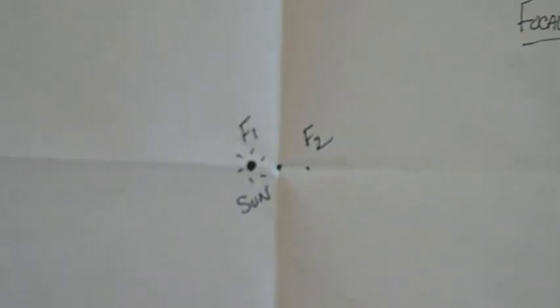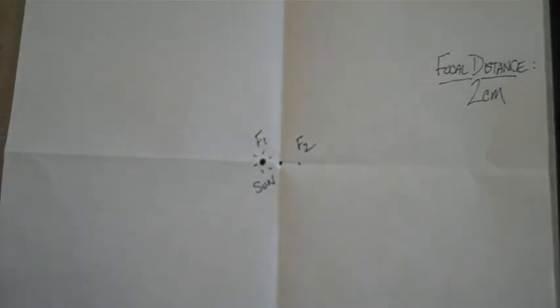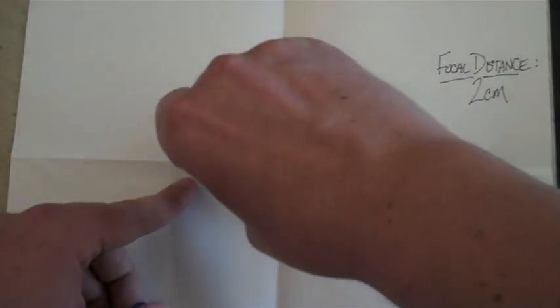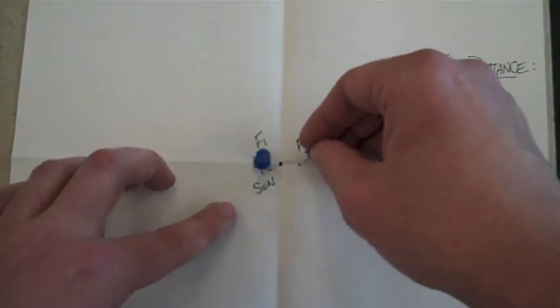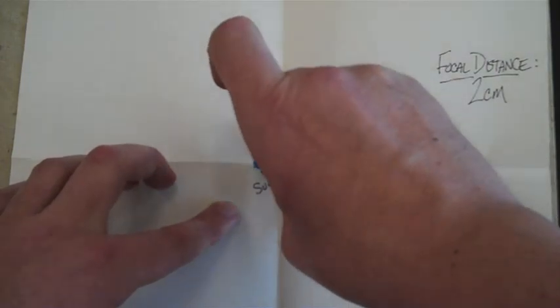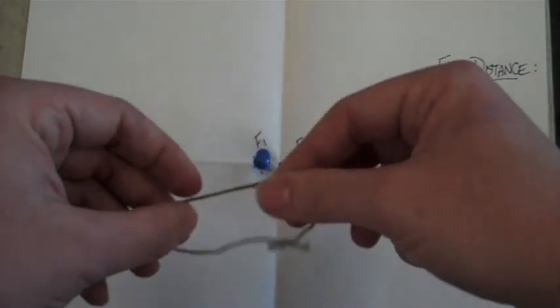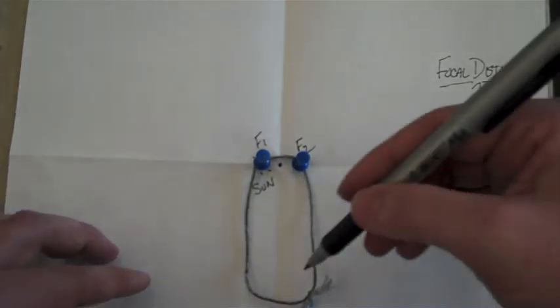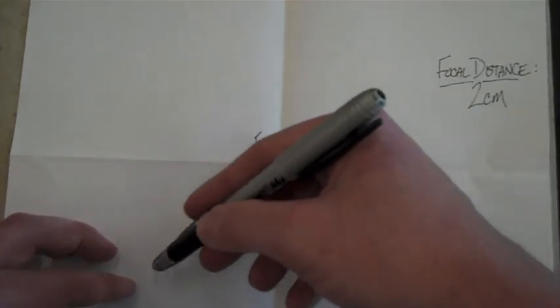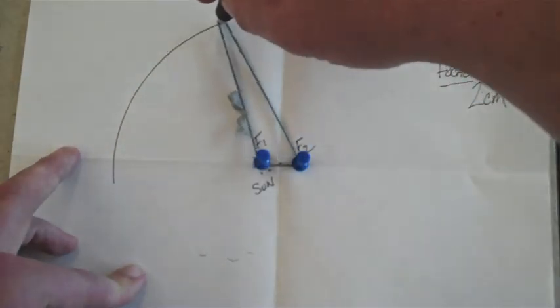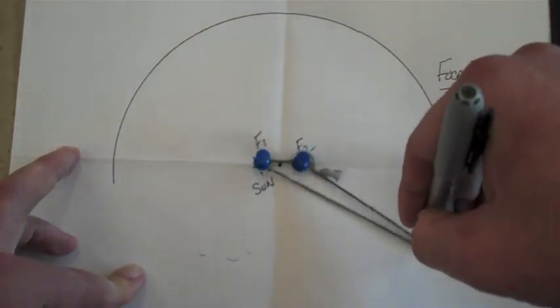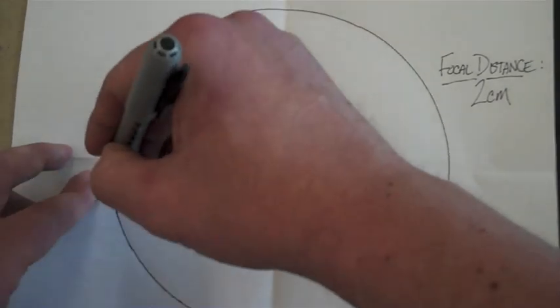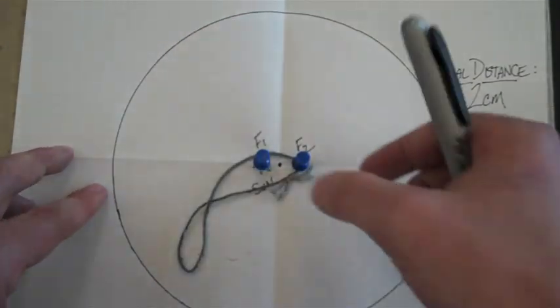Now you're going to take your push pins and put them into your focal points. You want to leave a little space in between the paper and the bottom of the push pin so the string will stay underneath the tack head. Take your marker or pen, pencil, whatever, and go ahead and draw your ellipse. Keep that string nice and tight. So there's my ellipse.